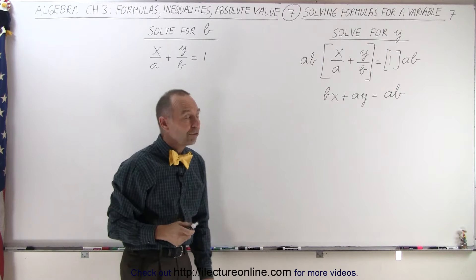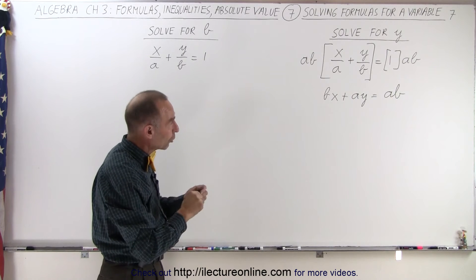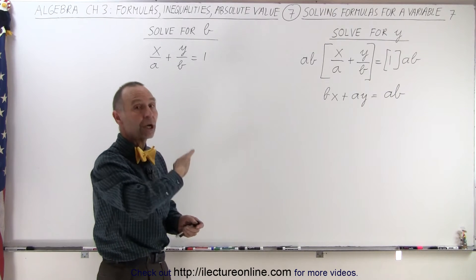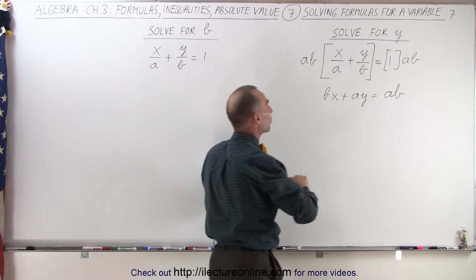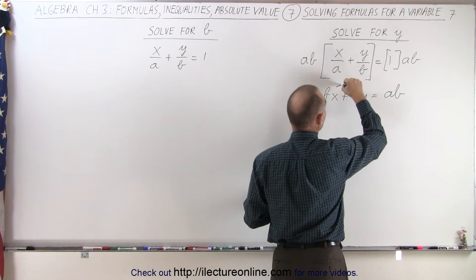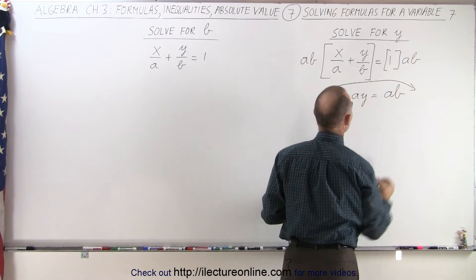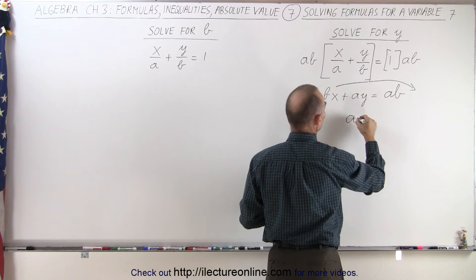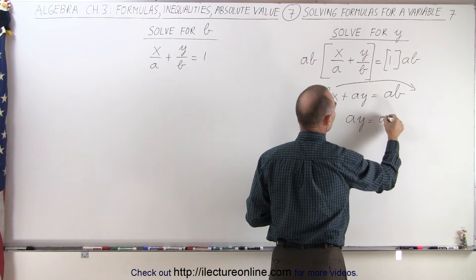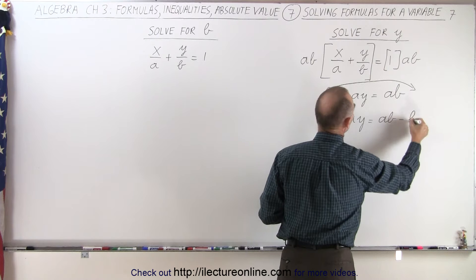Okay, next we want to solve for y, which means I want all the terms of y on the left side, but all the other terms on the right side, which means bx, which does not contain a y, will have to move to the right side. That means I end up with ay is equal to ab minus bx.